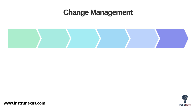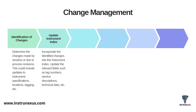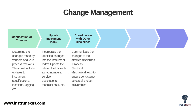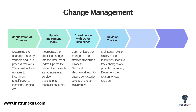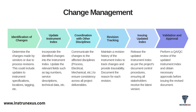A project is never static, so you must have a robust change management process. The workflow is straightforward. First, you must identify the changes, whether they come from vendors or from process revisions — this could be an update to a specification, a location, or a tag. Second, you immediately update the instrument index, incorporating those changes into the relevant fields. Third, you must coordinate with other disciplines, communicating the changes to the process, electrical, and mechanical teams to ensure everyone stays consistent. You must use revision tracking to document what changed and why. Finally, you issue the updated index after it goes through validation and approval, ensuring all stakeholders have the latest version.